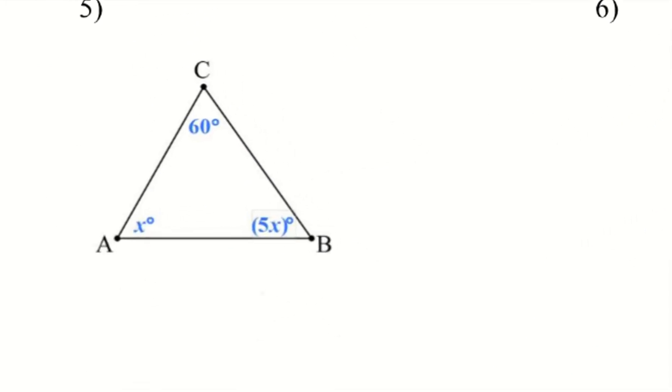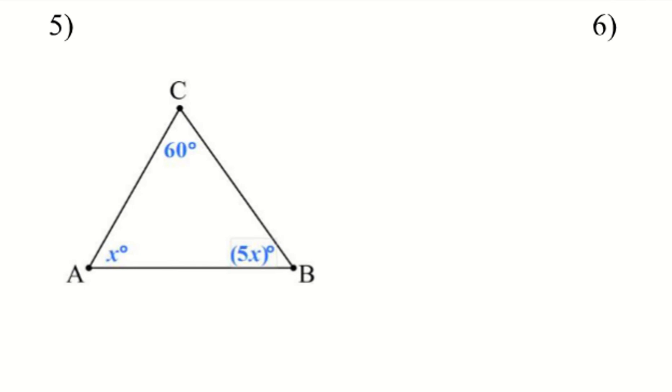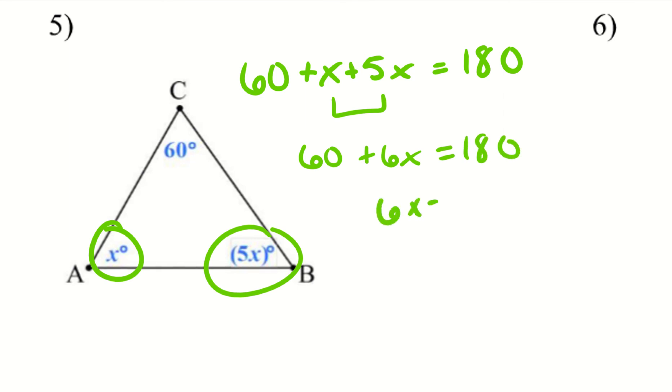Let's take a look at 5. We still want to do the same process. Even though we have two angles with x in it, I can still solve. I'm still going to add everything together and it is still going to equal 180. Alright, so we'll go ahead and combine these. So 60 plus 6x equals 180. Subtract 60 from both sides and get 120. And then divide by 6. x equals 20.